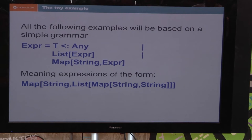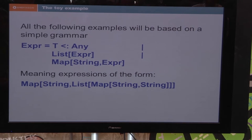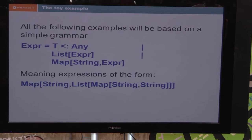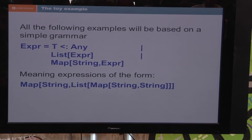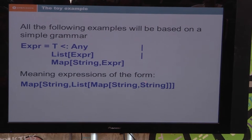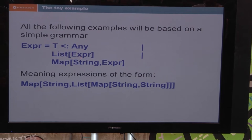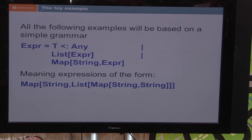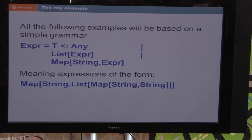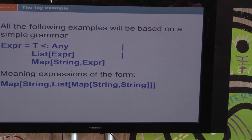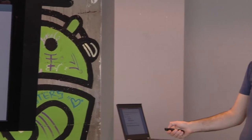We're going to play with a toy example, because this is basically the only example that can show you the power of the type system without getting too deep into the mechanics. Our entire grammar is going to be based on elements where an expression can be anything, a list of anything, or a map from string to anything. All the examples are going to be where T is a string. This has quite a lot of information you can use at compile time to save you writing a lot of code.